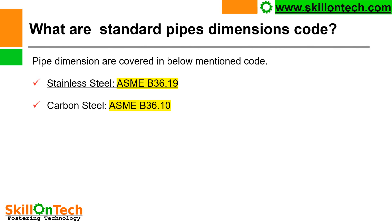What are standard pipe dimensions codes? Pipe dimensions are covered in the below mentioned codes. For stainless steel pipelines, the code is ASME B36.19. For carbon steel pipes, the code is ASME B36.10. These codes cover all the dimensions of the pipeline such as diameter, thickness, and various other dimensions required for manufacturing of a pipeline. These codes are generally useful to pipe manufacturers as well as piping engineers.